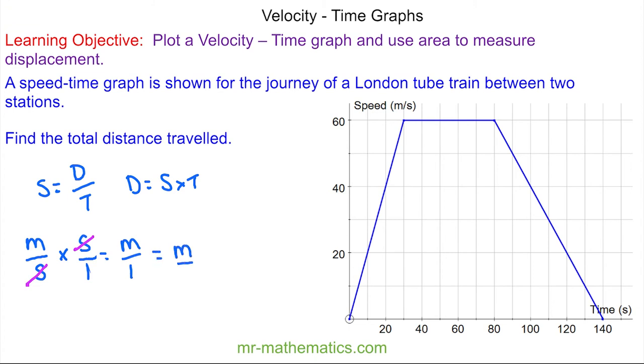So now we have meters divided by one, or just meters. To work out the distance in meters we have to work out the area underneath this graph, because area is a product of two dimensions, in this case speed and time.